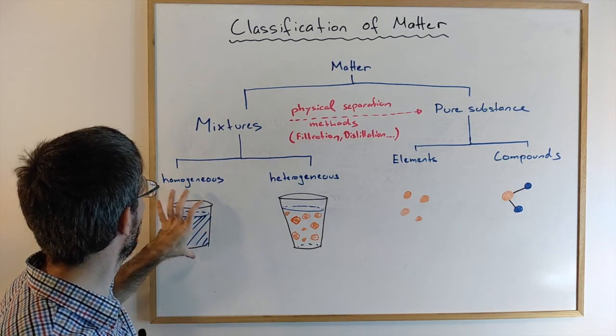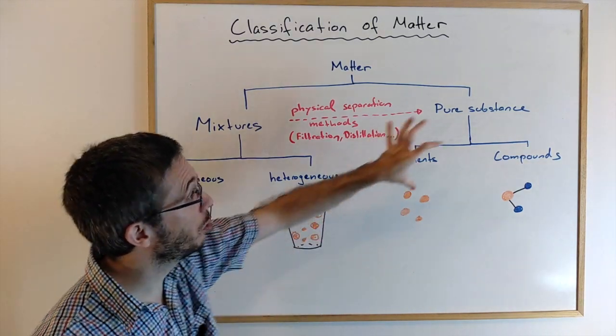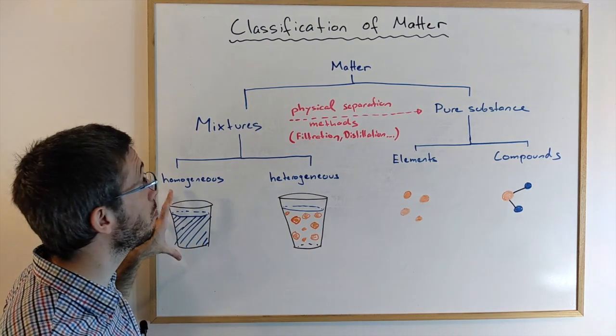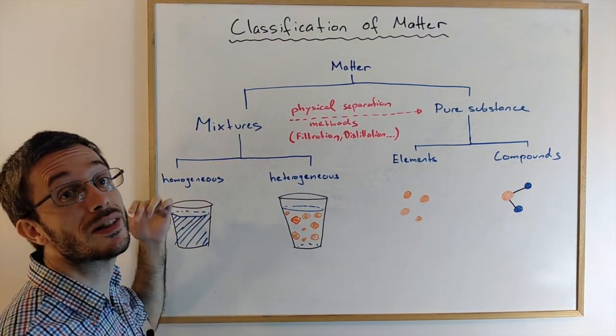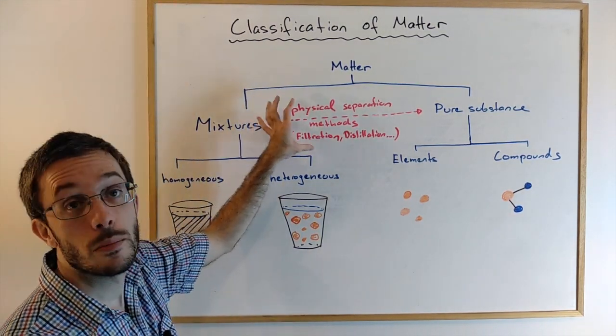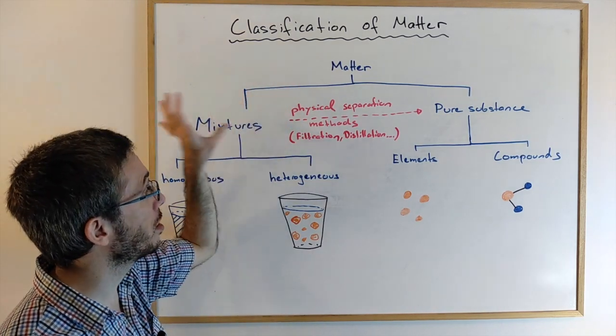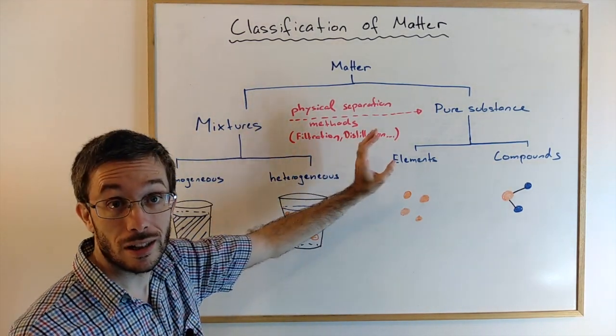How do we distinguish between a homogeneous mixture and a pure substance? A homogeneous mixture can be further separated by physical separation techniques, such as filtration or distillation.